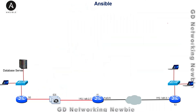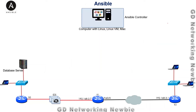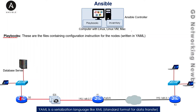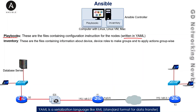Now let's discuss Ansible specifically. Ansible is a software you download and install on a computer. Once installed, you create files containing instructions to send to the networking devices. The key file is the playbook, which contains the configuration instructions for the nodes. These files are written in YAML, which is a serialization language similar to XML and is the standard format for data transfer. Ansible also uses the Python language.